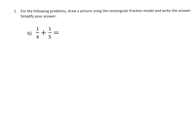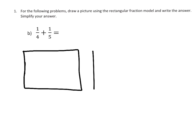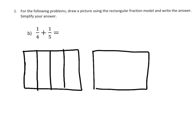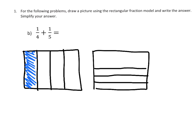Let's practice. We're going to draw two rectangles that are identical, as identical as I can make them. The first one we're going to cut into 4ths and shade in 1 of those 4ths. Then the second one we're going to cut into 5ths — only this time going horizontally — and shade in 1 of those 5ths.